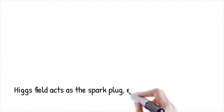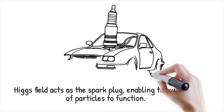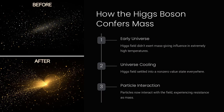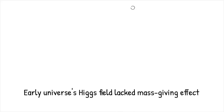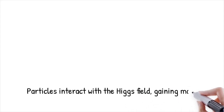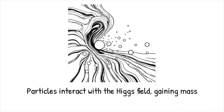Think of building a car engine and discovering that, according to your blueprint, the engine should never start. The Higgs field is like the spark plug that makes the engine run. In the early universe, when temperatures were unimaginably high, the Higgs field didn't yet exert its mass-giving influence. As the universe cooled, the Higgs field settled into a state where it had a non-zero value everywhere. Particles traveling through space now found themselves interacting with this field — like swimmers moving through a thick fluid — and this difficulty translates into what we measure as mass.